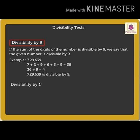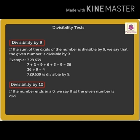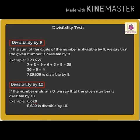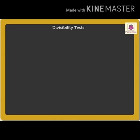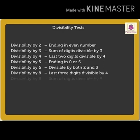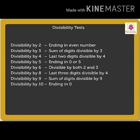Divisibility by 9 is also similar to divisibility by 3. Divisibility by 10: if the number ends in 0, we say that the given number is divisible by 10.